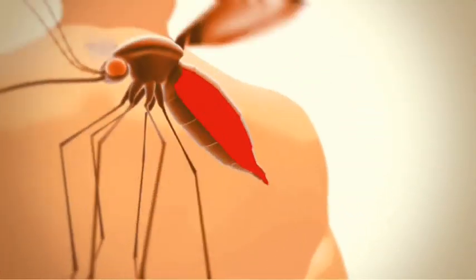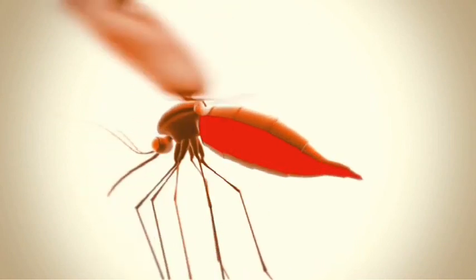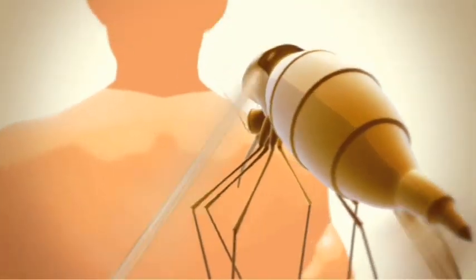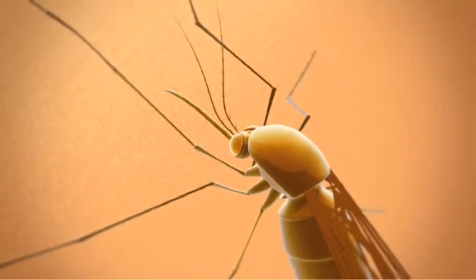Inside the mosquito, the gametocytes develop into new sporozoites. So now the human has infected the mosquito, the life cycle comes full circle and continues.